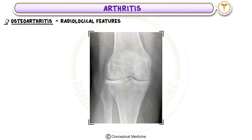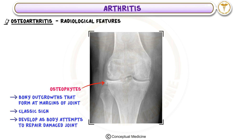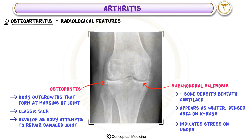Radiological Features: On imaging, osteoarthritis has hallmark features. First, osteophytes — bony outgrowths that form at the margins of the joint — are a classic sign and develop as the body attempts to repair the damaged joint. Second, subchondral sclerosis refers to increased bone density beneath the cartilage, appearing as a wider, denser area on X-rays, indicating stress on the underlying bone.